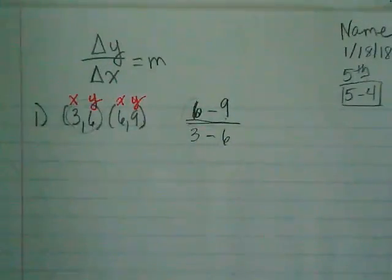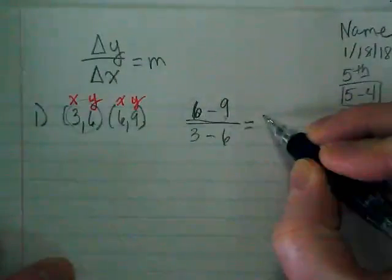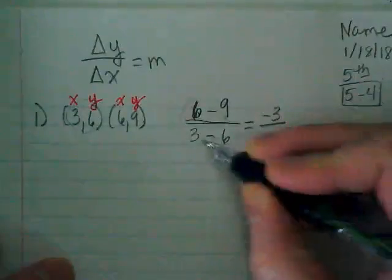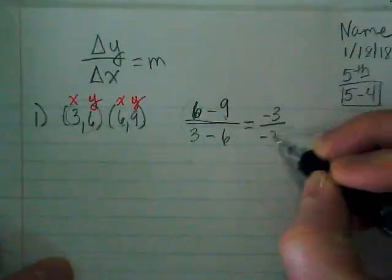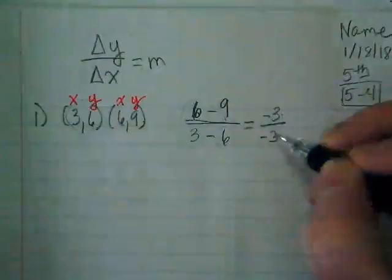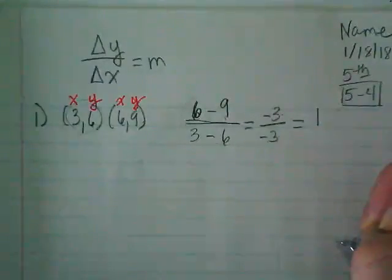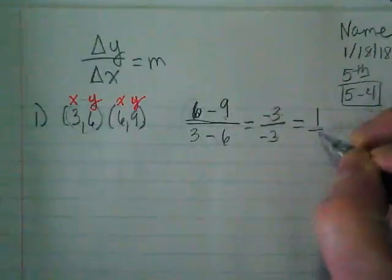So this ordered pair is here and this ordered pair is here and they have the subtraction sign in front or in between. And then we just subtract and we're going to find our slope. 6 minus 9 is minus 3. And 3 minus 6 is minus 3. Negative divided by negative is positive. 3 over 3 is 1. This slope is 1 or, if you want to show the rise over run, it's 1 over 1.